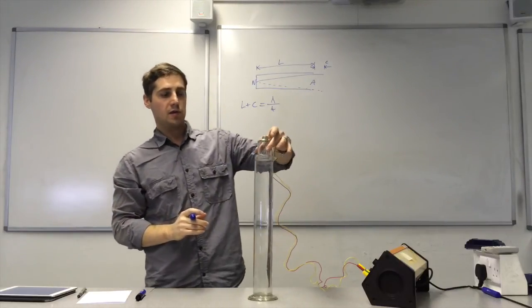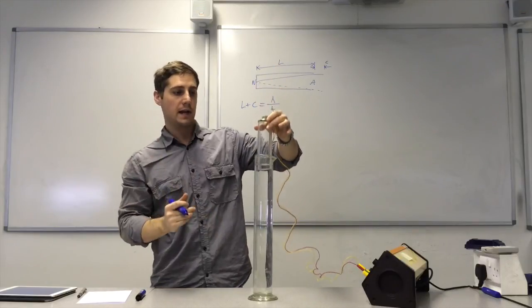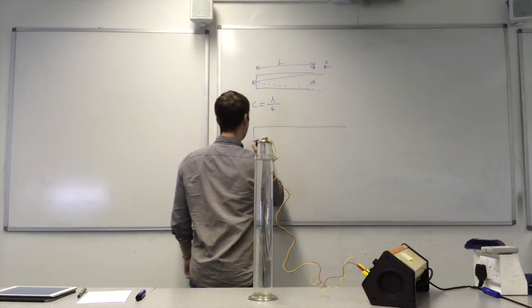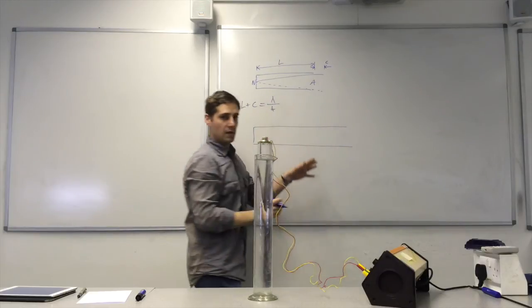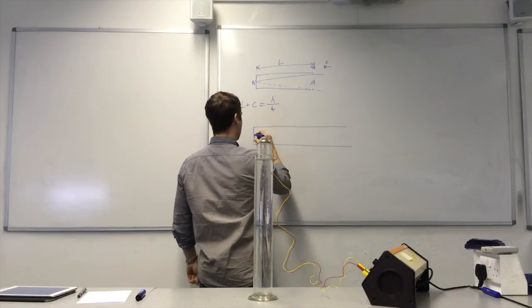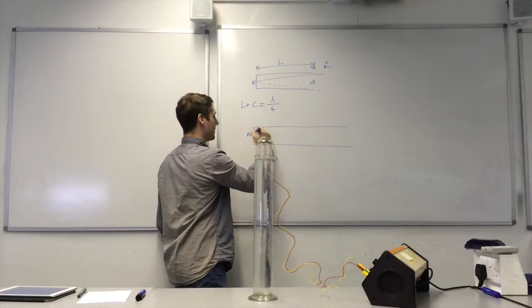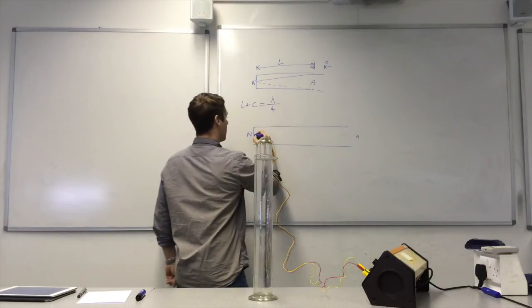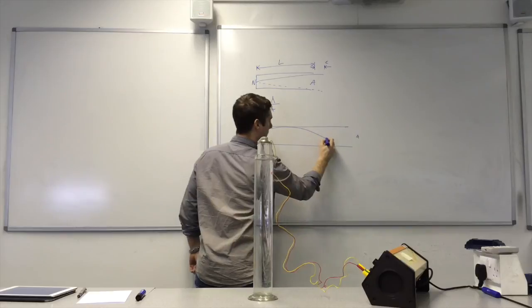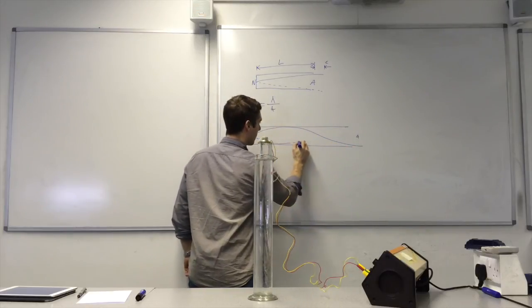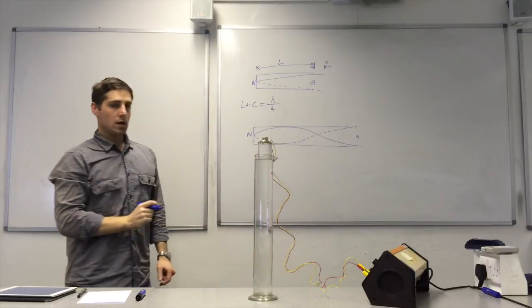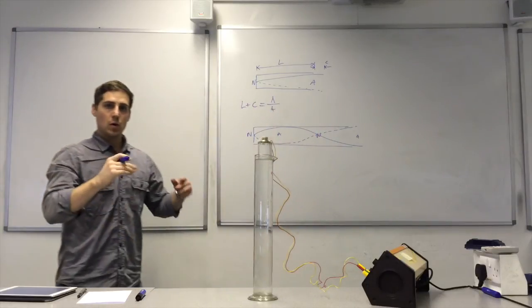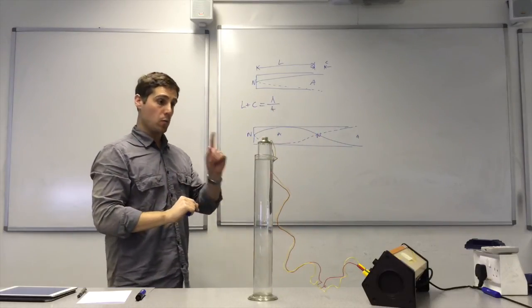And then I continue to increase the length of the pipe and I form the next harmonic. And that looks like this. It's a longer pipe. And again we have a node at this end and we have an antinode just outside the end of the open end. So that's what the shape of our wavelength would look like. There's an antinode here and a node there. So we've increased the number of nodes and antinodes by one each.